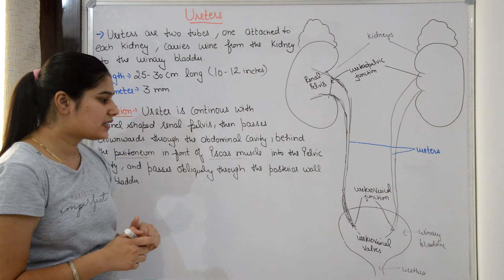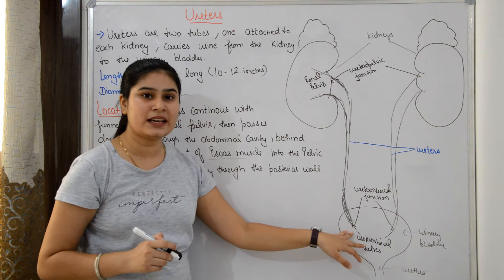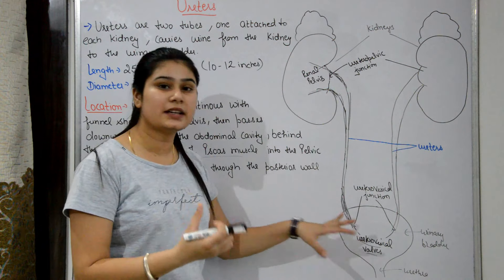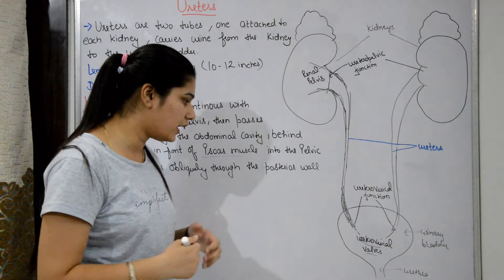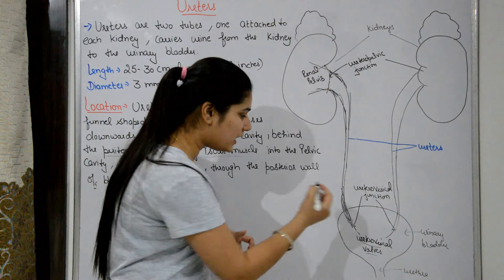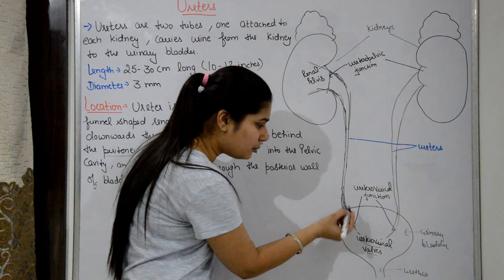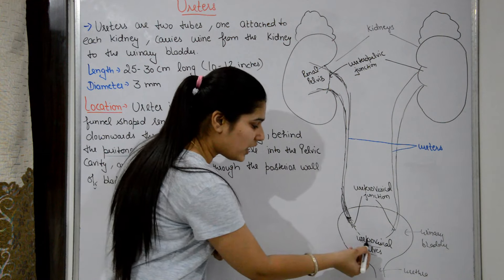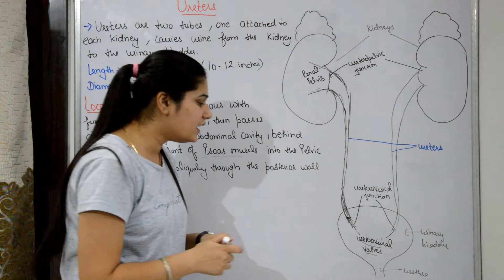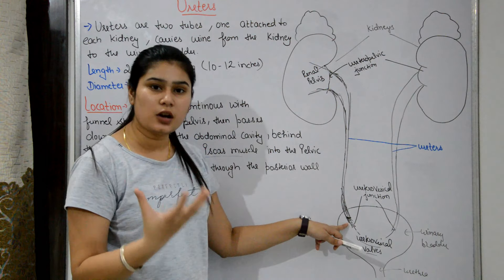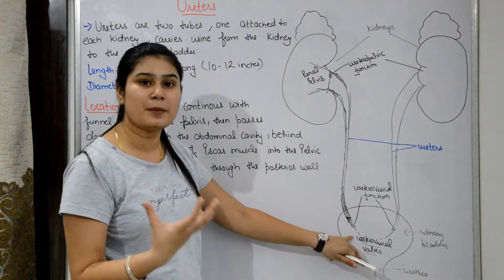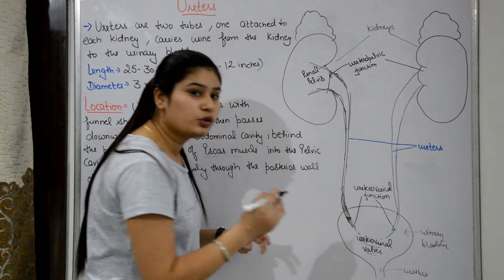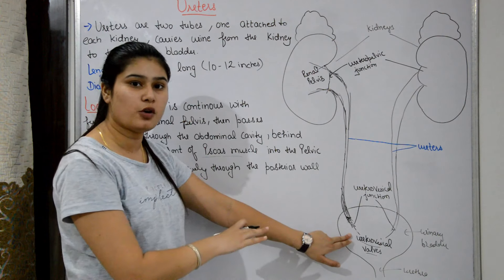When the pressure inside the urinary bladder increases, there is a valve at the ureterovesical wall that closes. The function of this valve is to prevent backflow of urine from the urinary bladder back into the ureter.